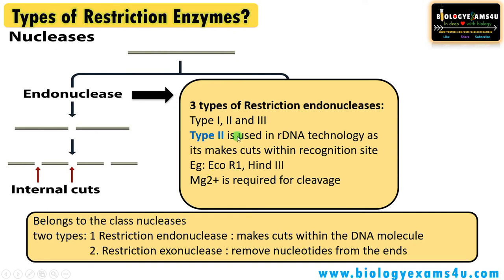Endonucleases are widely used in recombinant DNA technology. There are three types of restriction endonucleases: Type 1, Type 2, and Type 3. Type 2 is most widely used in recombinant DNA technology, as it makes specific cuts within the DNA molecule at a recognition site or restriction site — examples include EcoRI and HindII. Magnesium ions are required for cleavage. Types 1 and 3 make random cuts and are rarely used.